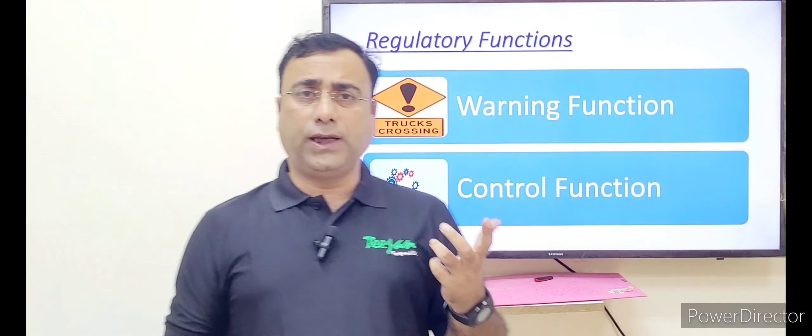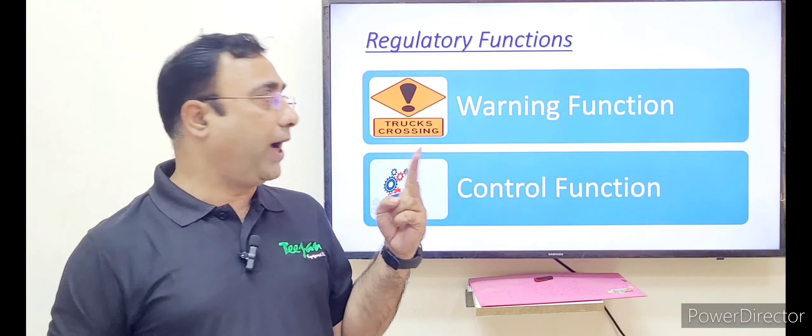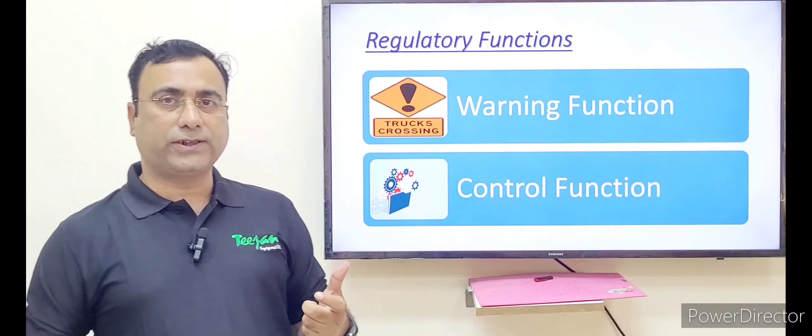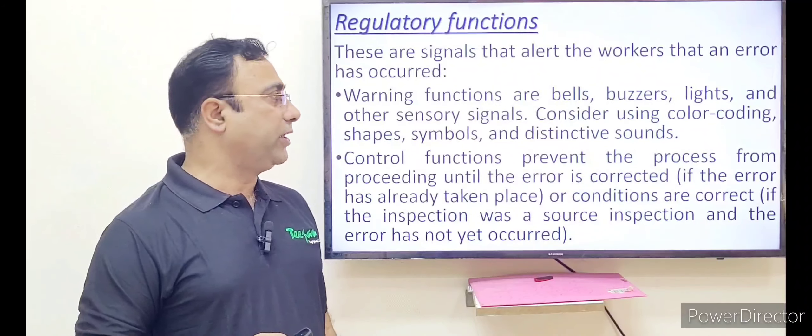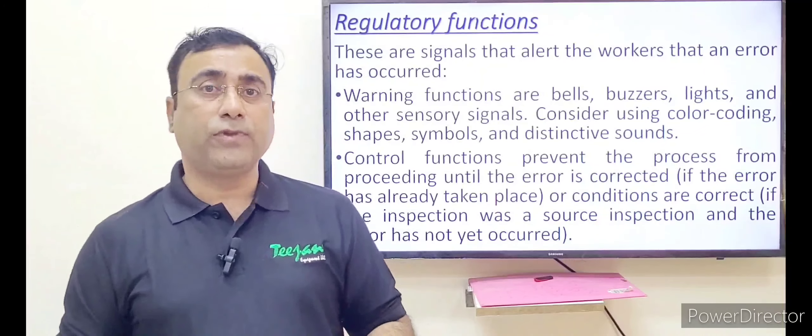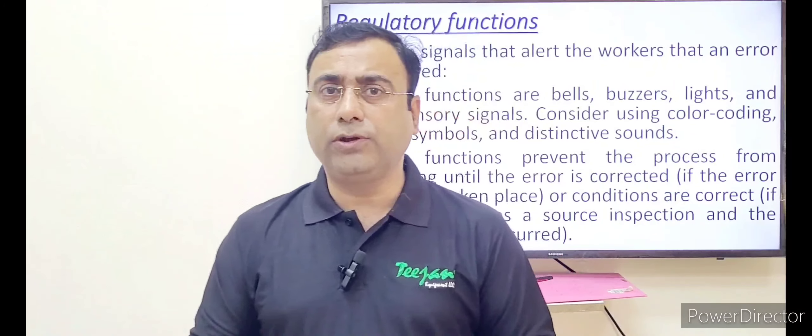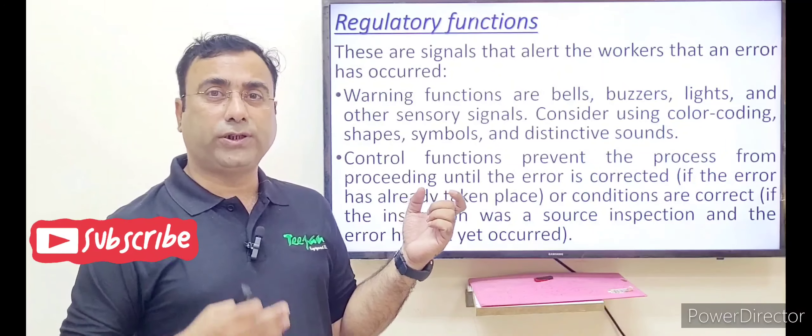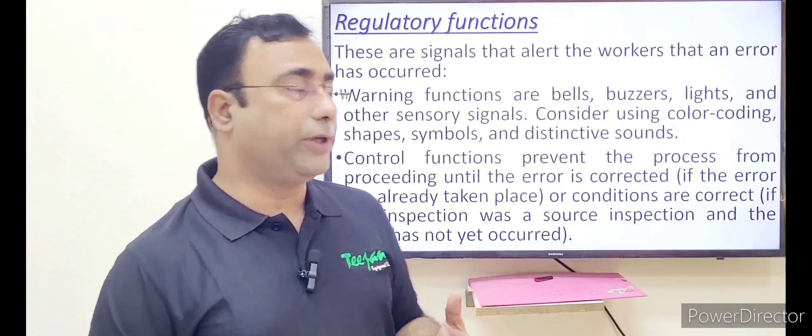Then the last one is regulatory function. Regulatory function have two options, either warning function or the control function. Warning function is like when there is any mistake or any sequence is off, then they are making the alarm, the sound, the buzzer, which will inform to the person who is in charge that there is something has gone wrong. In that system, there is color coding which gives importance to understand what the problem may be.